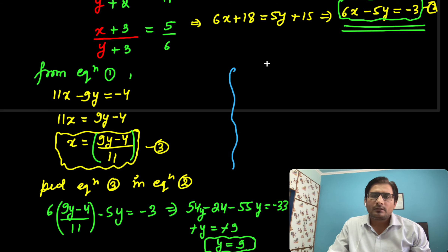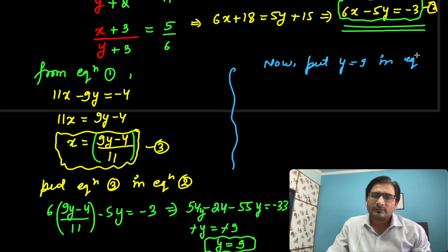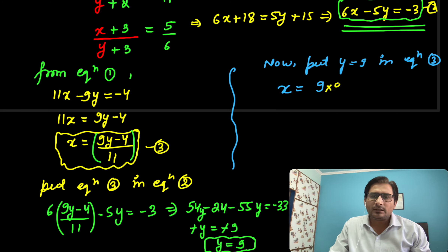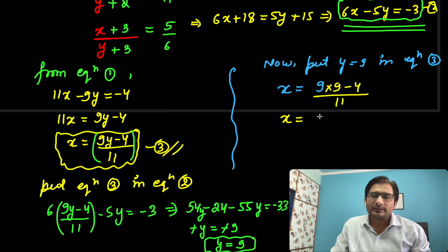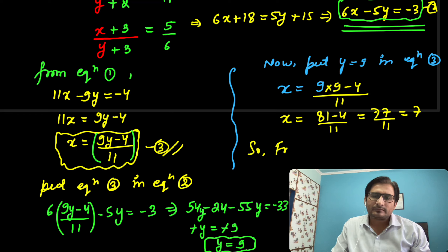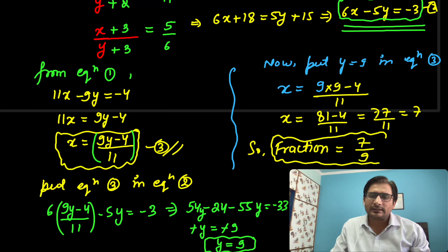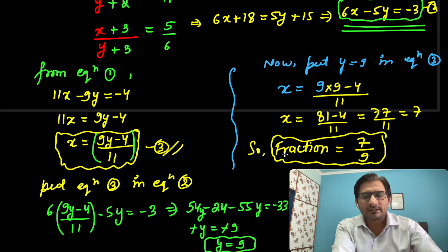Now find the value of x by putting y = 9 into Equation 3. So x = (9y − 4) upon 11 = (9×9 − 4) upon 11 = (81 − 4) by 11 = 77 by 11 = 7. So the fraction is 7 by 9 — that is the answer. I hope it is clear to you all.